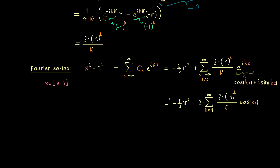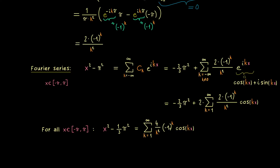Let's make it nicer by bringing the constant to the left-hand side. For all x in our interval, x² - ⅓π² equals the infinite sum of (4/k²)·(-1)^k·cos(kx). And we know the convergence of this series is uniform in x. So the theory of Fourier series gives us a nice identity for an infinite sum, where each point x in the interval can yield a different sum formula.